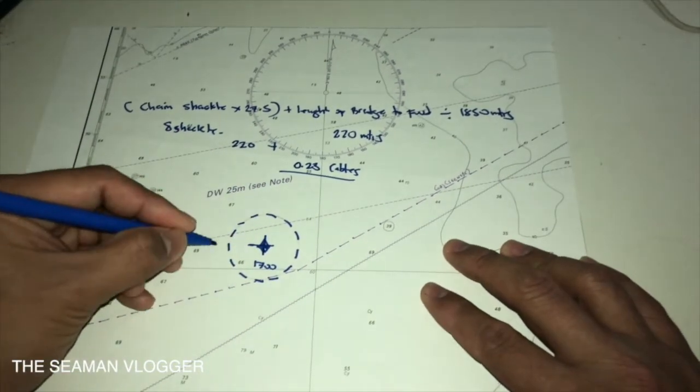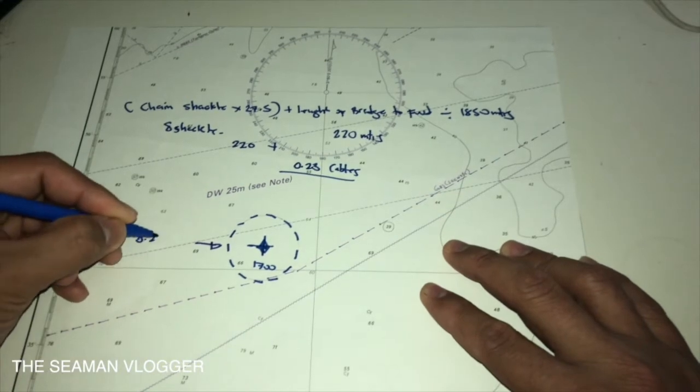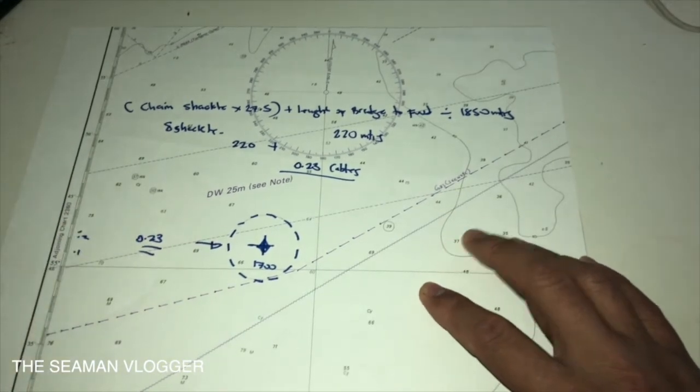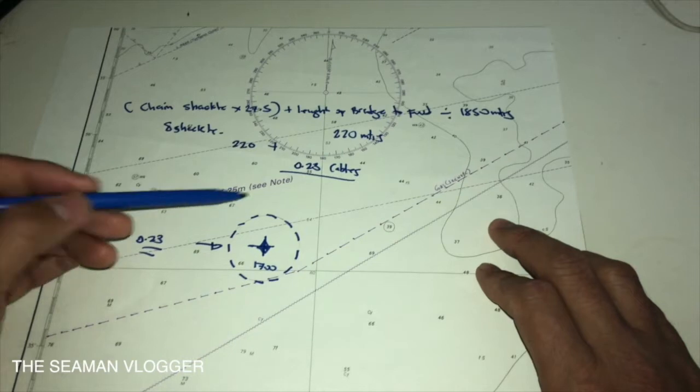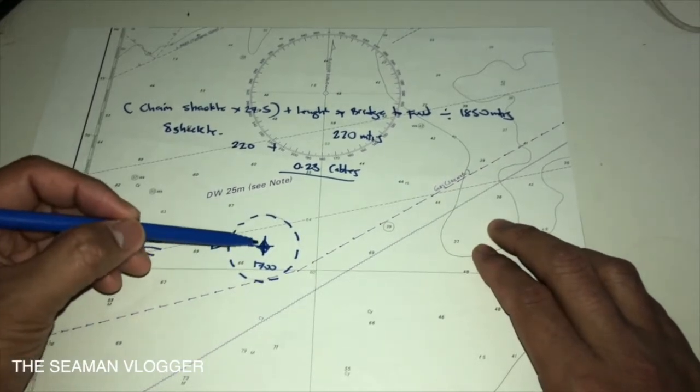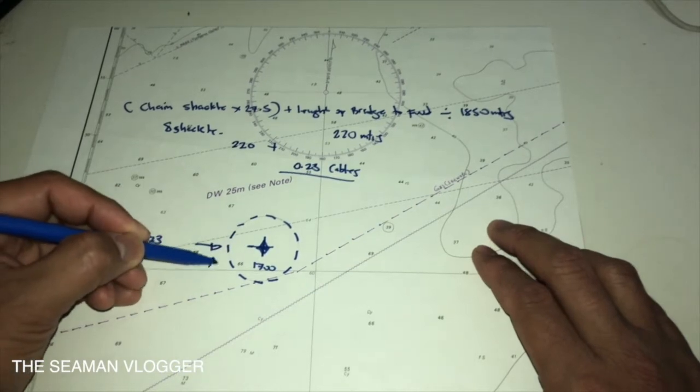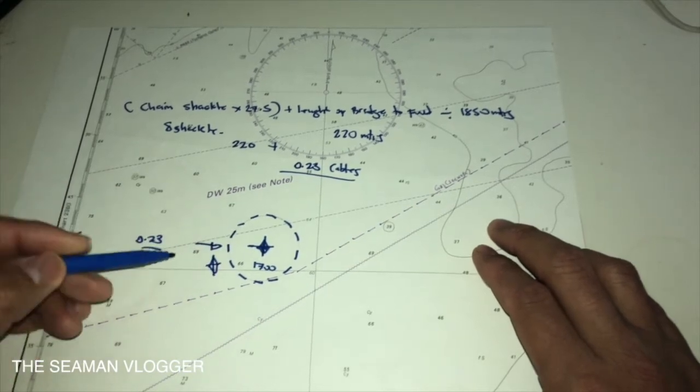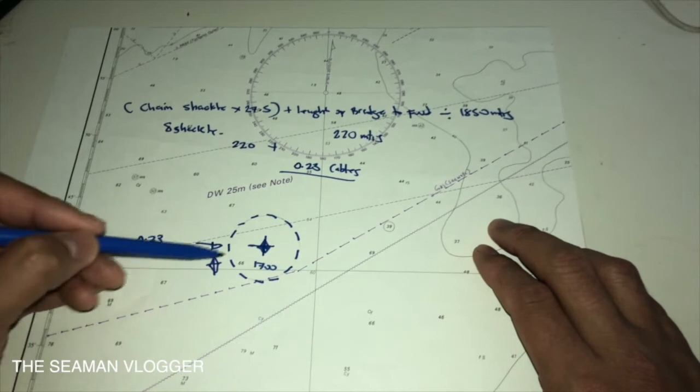So, this one is the 0.23 cables. So, what the meaning of this circle? It means, for example, you plot every hour your position, and your position or your vessel comes here. It means, you're dragging your anchor.